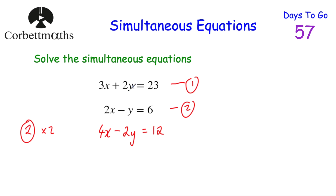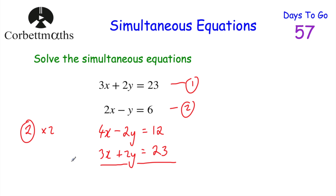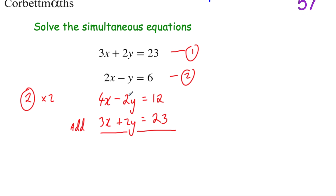So the y's will cancel and we'll eliminate them. I'm going to write equation 1 beneath: 3x + 2y = 23. Now I'm going to add these two equations together, because if we add them the y's will cancel out. I write the word 'add' rather than a plus or minus sign here. So: 4x + 3x = 7x.